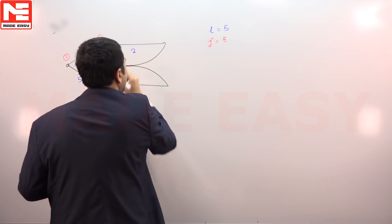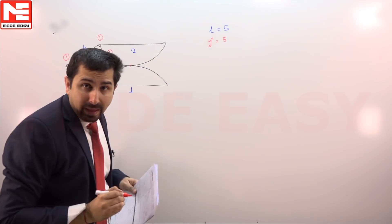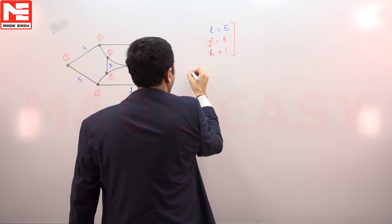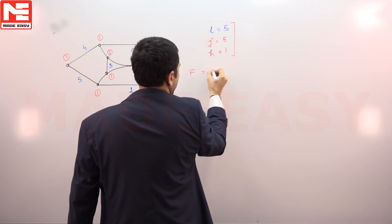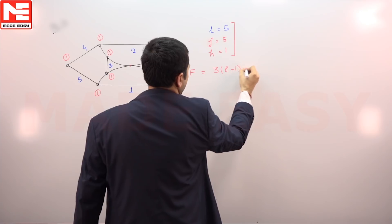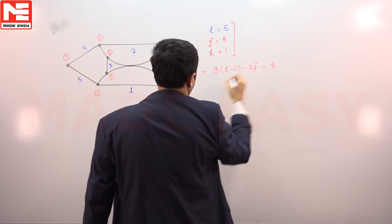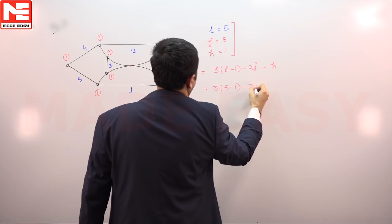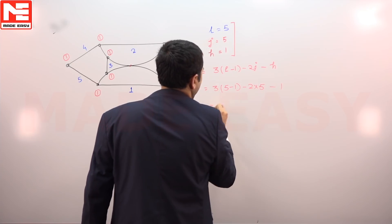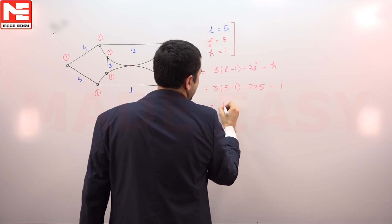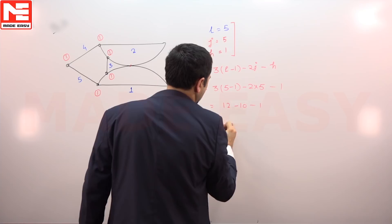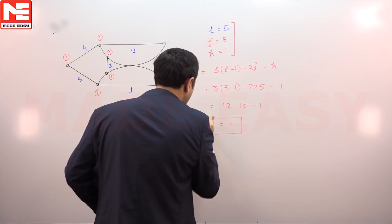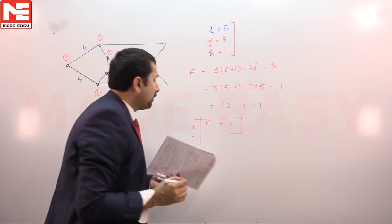We also have one higher pair, which is a point contact. Using the Kutzbach equation: degrees of freedom = 3(l − 1) − 2j − h = 3(5 − 1) − 2(5) − 1 = 12 − 10 − 1 = 1.